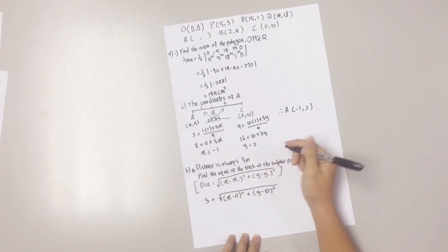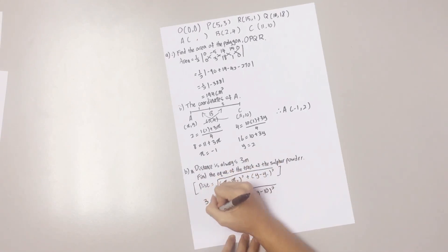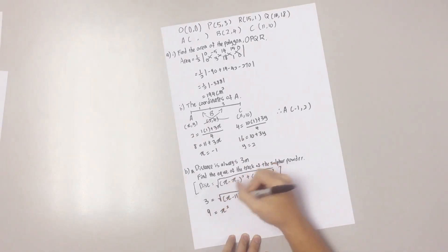You bring the square root over and you expand the brackets.